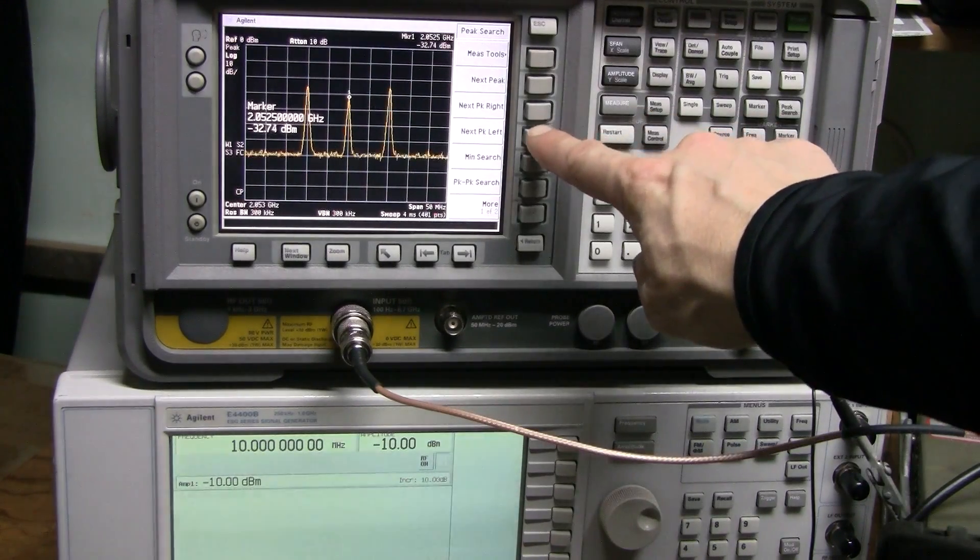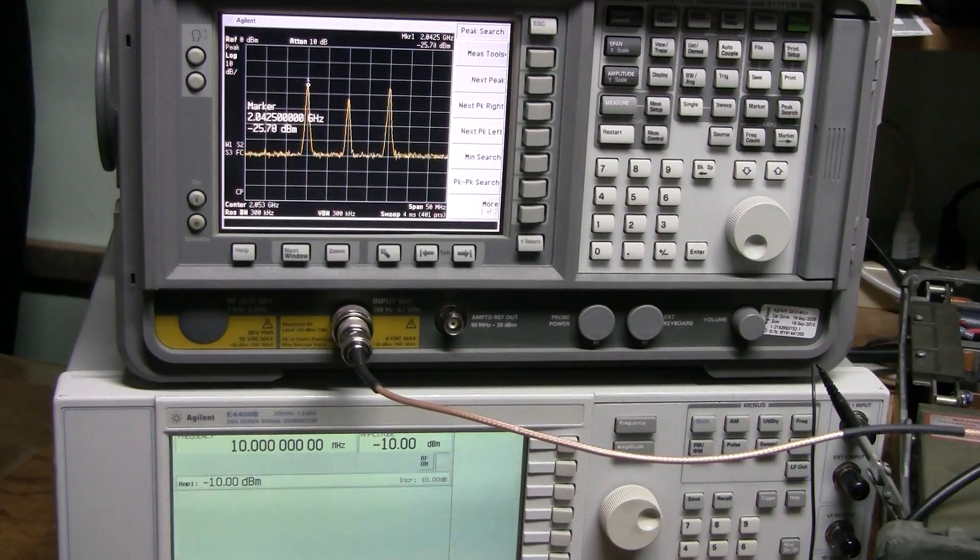And let's look at the signal. It is about minus 25.7 which is a bit higher. It was around minus 27 dBm before. So this seems like a bit better performance of the mixer.